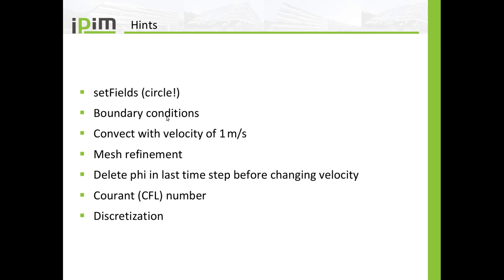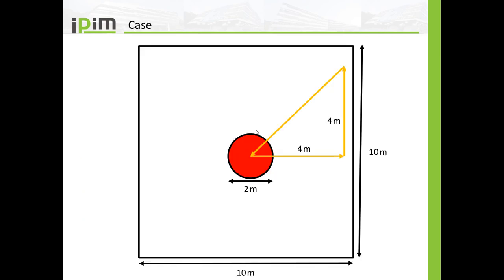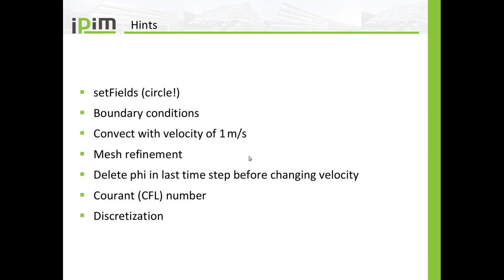Then watch out for the boundary conditions and convect your circle with a velocity of one meter per second. And I didn't give any instructions on that. You can also use a different velocity. Important is that you move your scalar to the right hand side and then to the top and back into the center. This is just a suggestion, this velocity here.